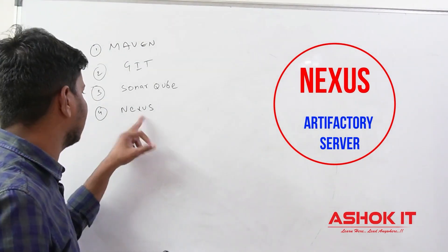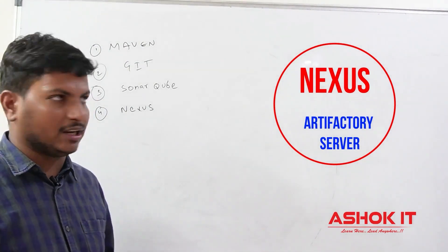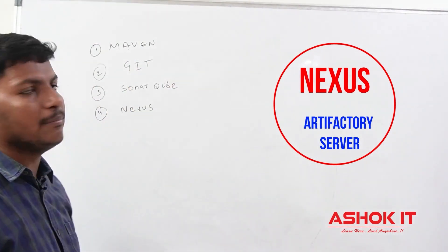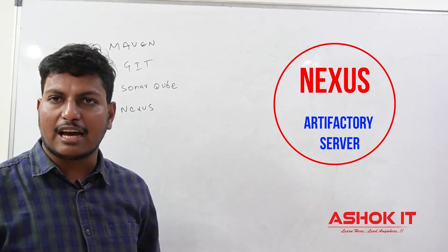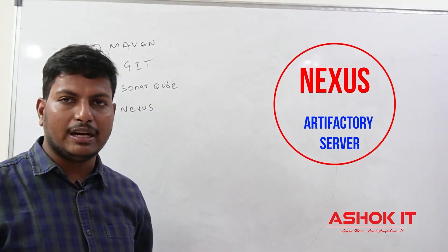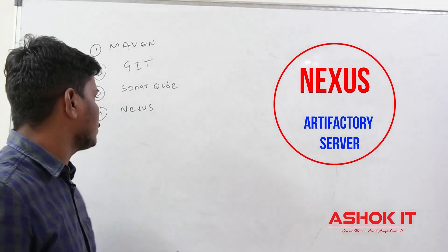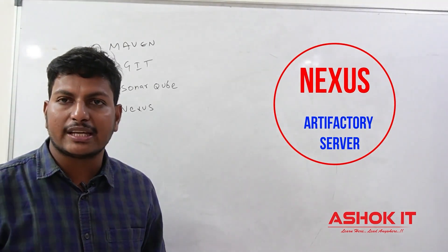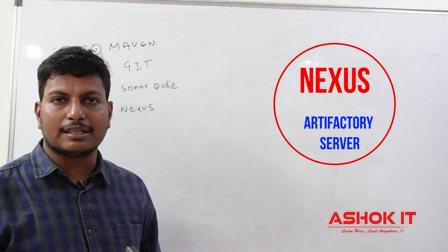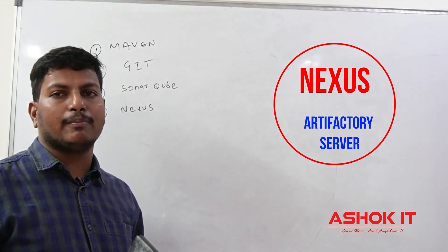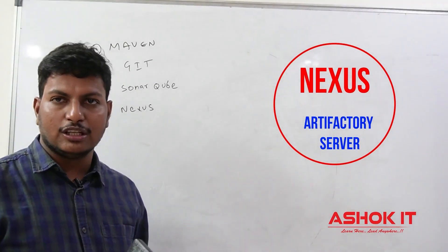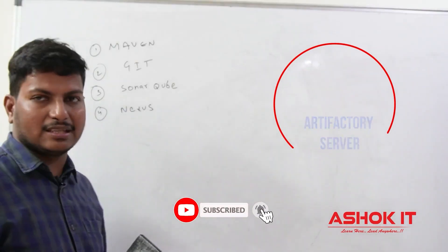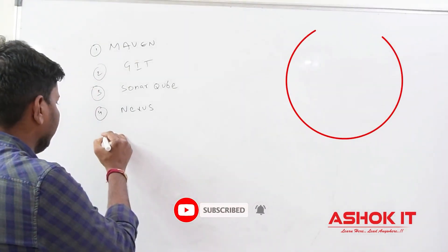The next one: Nexus. Nexus we are going to use as an artifact repository server. Project build files we are going to store in the Nexus repository. When we compile and package our project using Maven, it generates a JAR file or WAR file. The JAR or WAR can be stored in the Nexus repository. Project shared libraries — some common libraries available for multiple projects — those shared libraries we can also maintain in the Nexus repository.